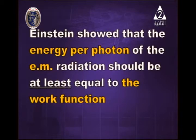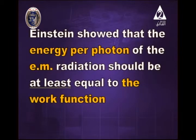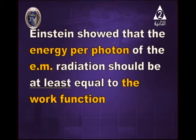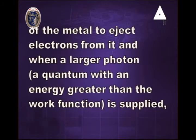Einstein showed that the energy per photon of the electromagnetic radiation should be at least equal to a certain value — we call it the work function — to enable the radiation to extract electrons from the surface of the metal. The energy per photon should be at least equal to the work function of the metal to eject electrons from it.